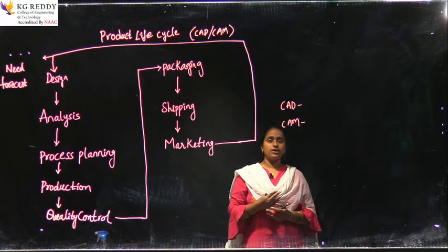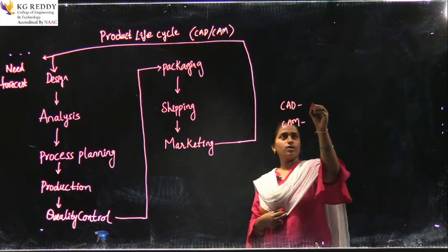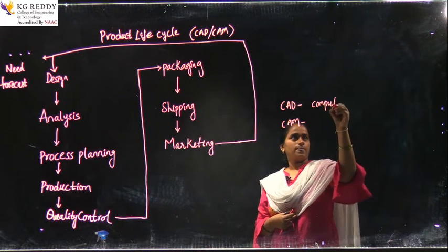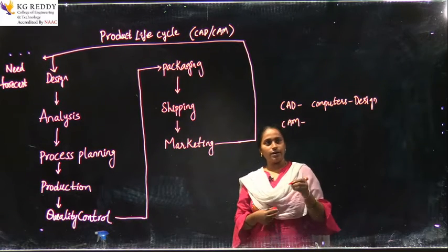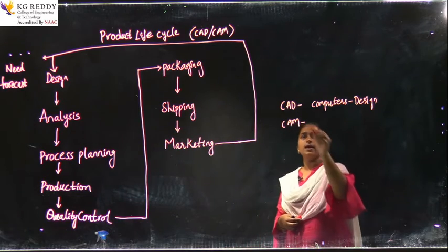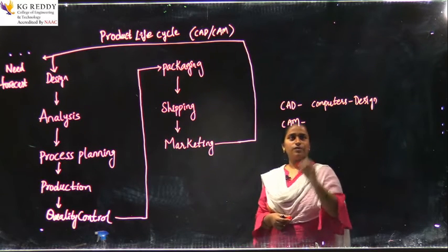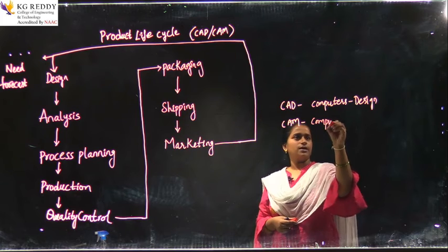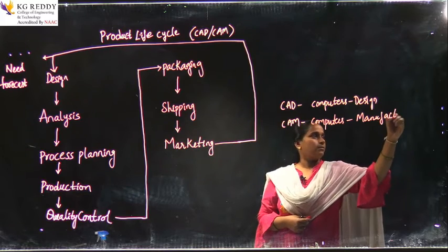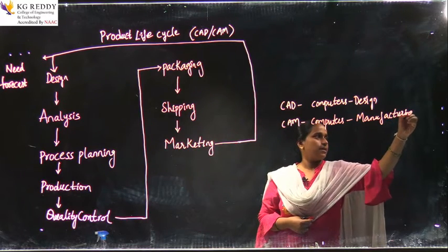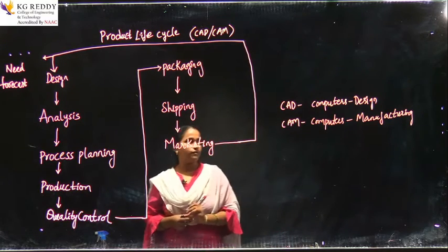The correct way to define it is: CAD is the application of computers in the design field, and CAM is the application of computers in manufacturing. You can simply say that the application of computers in the design field is called computer aided design, and the application of computers in manufacturing is called computer aided manufacturing.